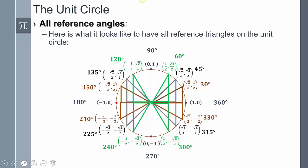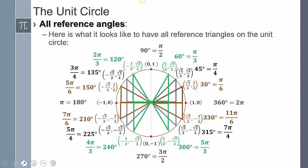Now these are all the values put together. I know it seems like a lot, but there's a really nice pattern in here, and we're going to go over that pattern very shortly in class. Even though it seems like a lot of information, it's not too bad because of the patterns. This version also includes the radian values, since we know how to convert between radians and degrees.